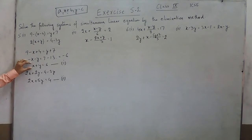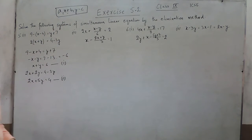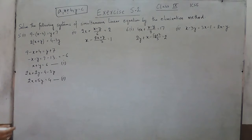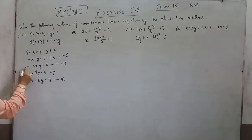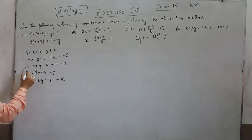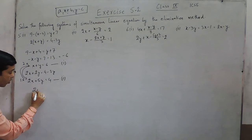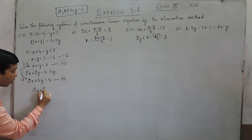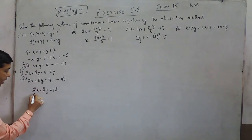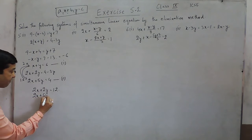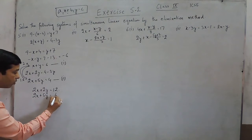Now as we know that we have written it in the simplest form of ax plus by is equal to c. Here the coefficient is 2 and here the coefficient is 1, so we multiply it by 1 and multiply this by 2. So the first equation becomes 2x plus 2y is equals to 12 and the second equation is 2x plus 5y is equals to 4.